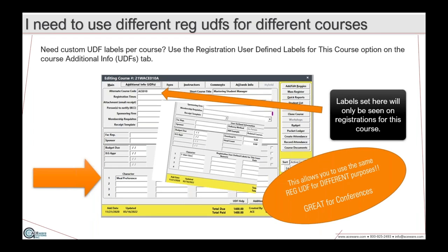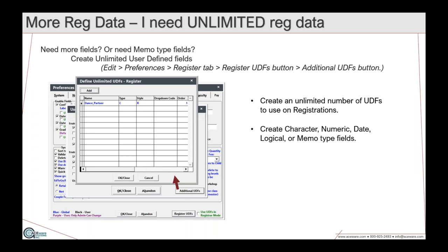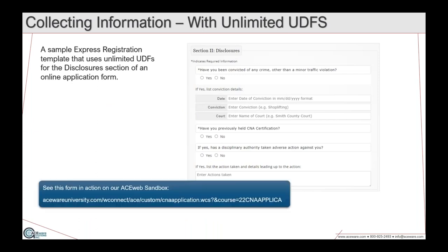If you're running out of data fields, the unlimited additional UDFs come into play. You can create as many as you want — character, numeric, date, logical, or memo types — and create drop-down lists for use on a web form. You can see an example in the sandbox. A quick show of hands: raise your hand if you are using any of the unlimited UDFs on name, course, or registration records. We got a couple — very good.